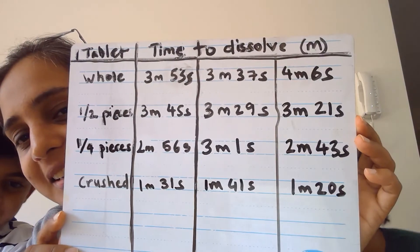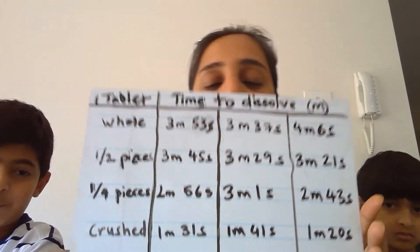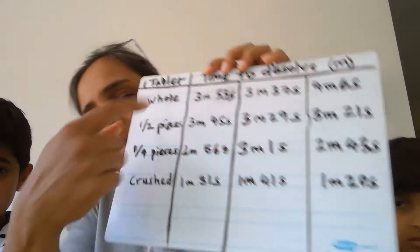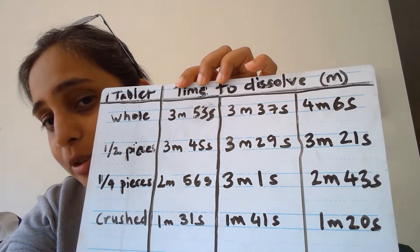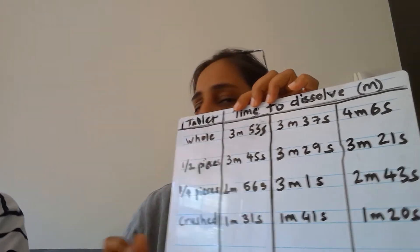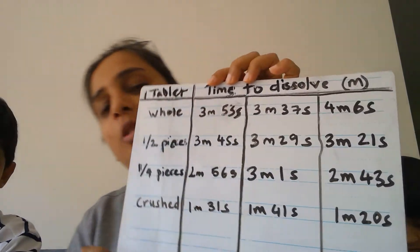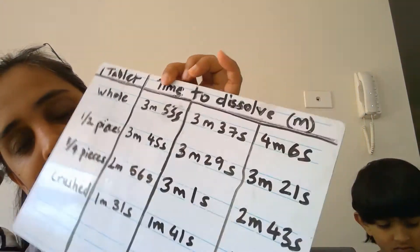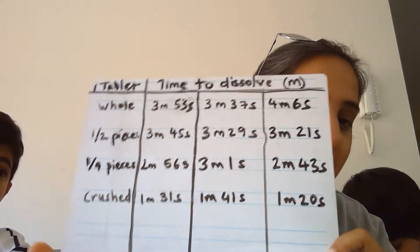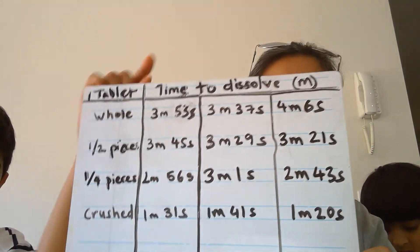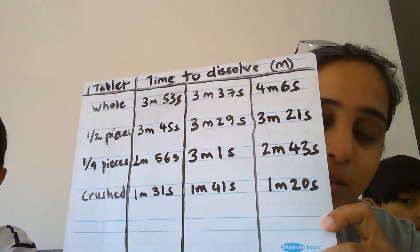Here is our results table — as you can see we repeated it three times so that it increases the reliability of the data. We can see that between the whole and the half tablet the results are not very distinctly different, but the trend is clear: as the pieces get smaller the time gets less. So when surface area is increased, the rate of reaction actually increases. This data can be represented in a graph so we can see how the independent and dependent variables are related.